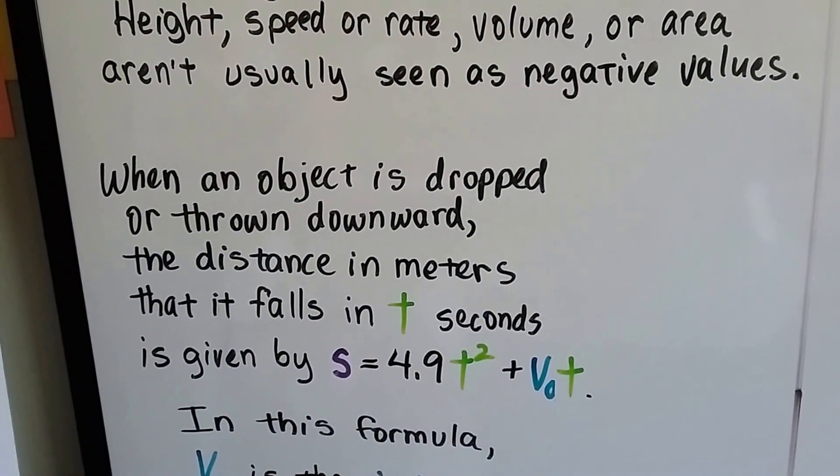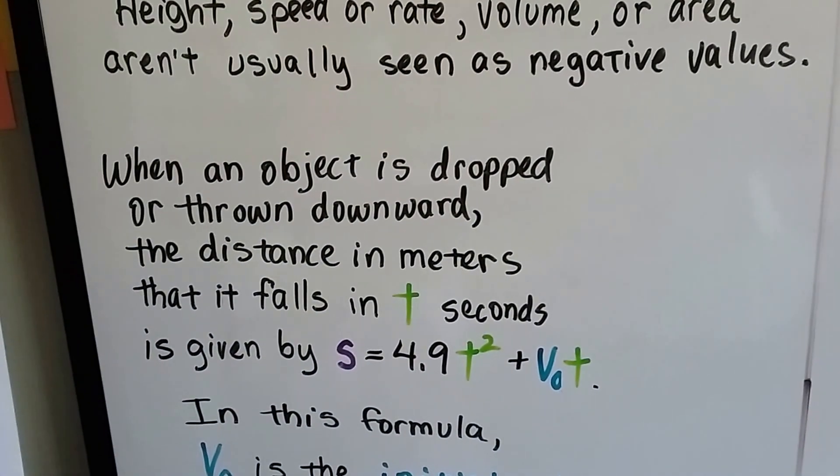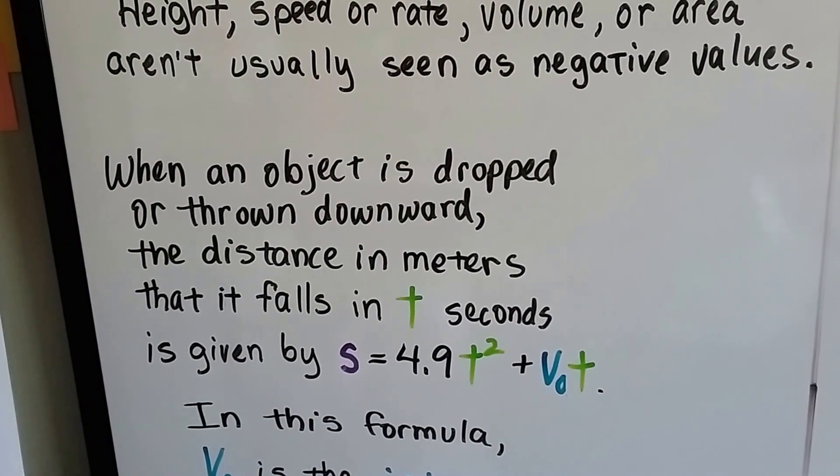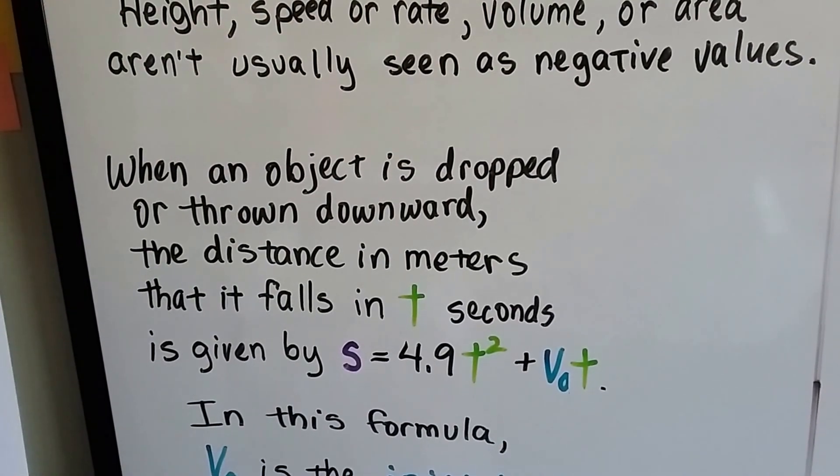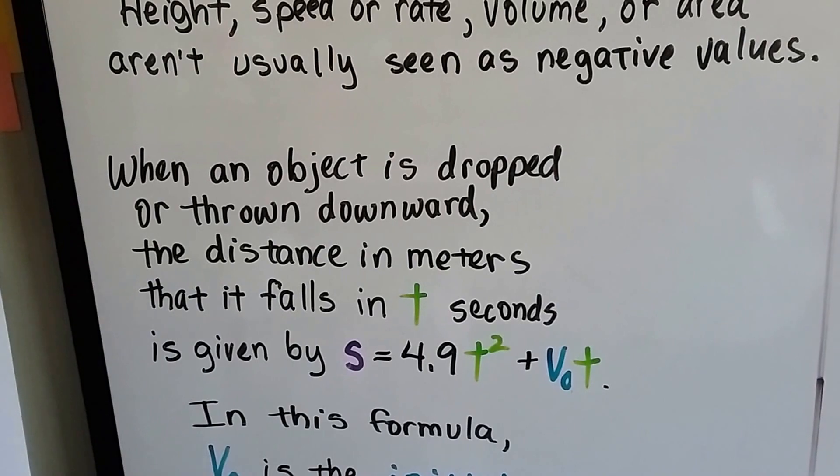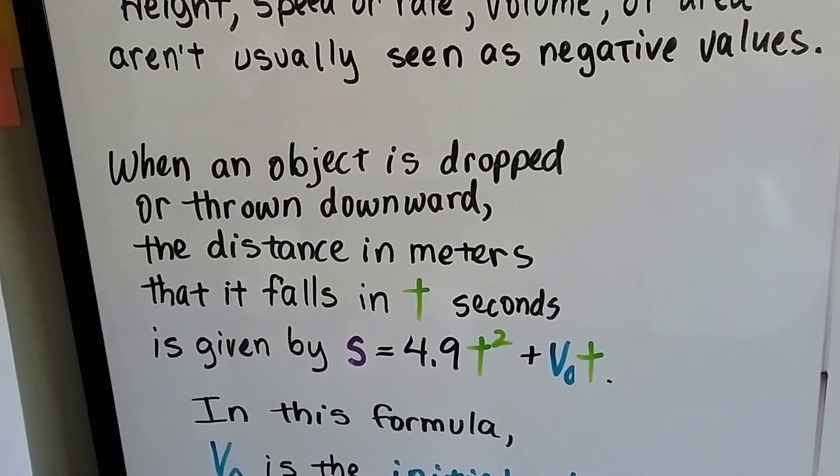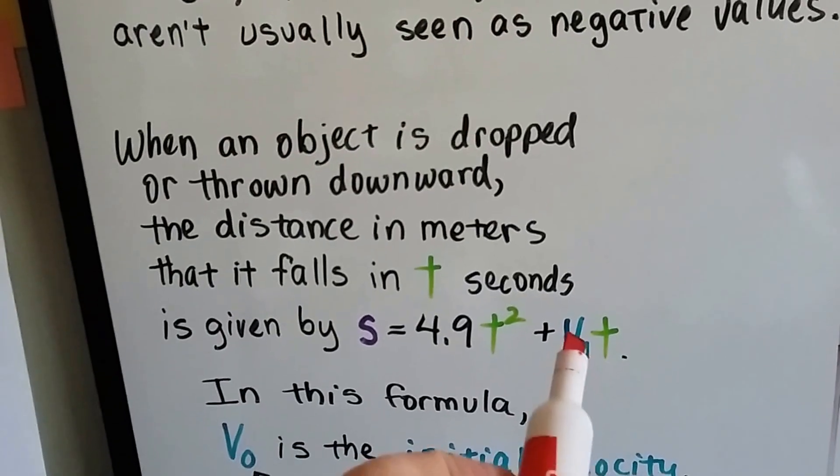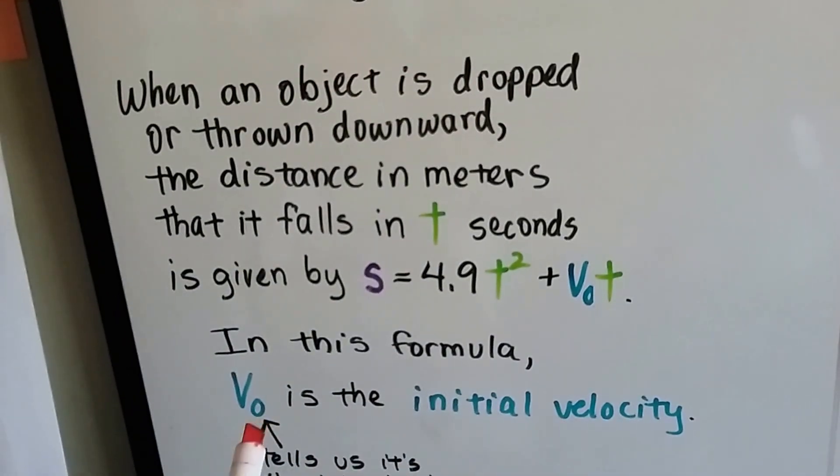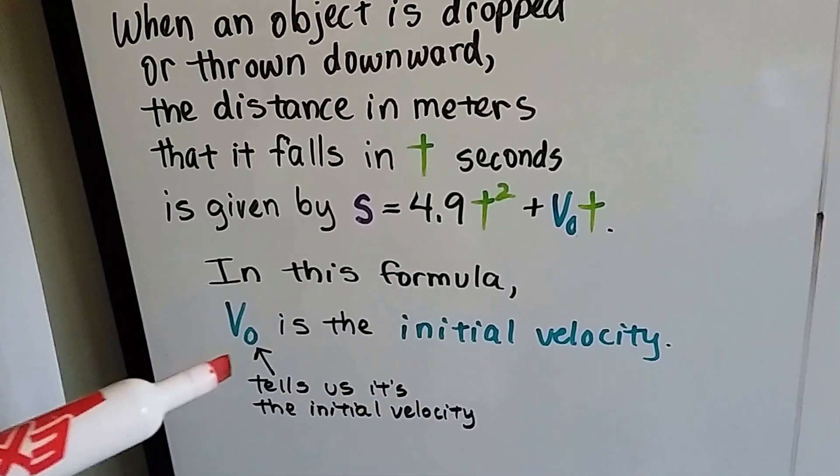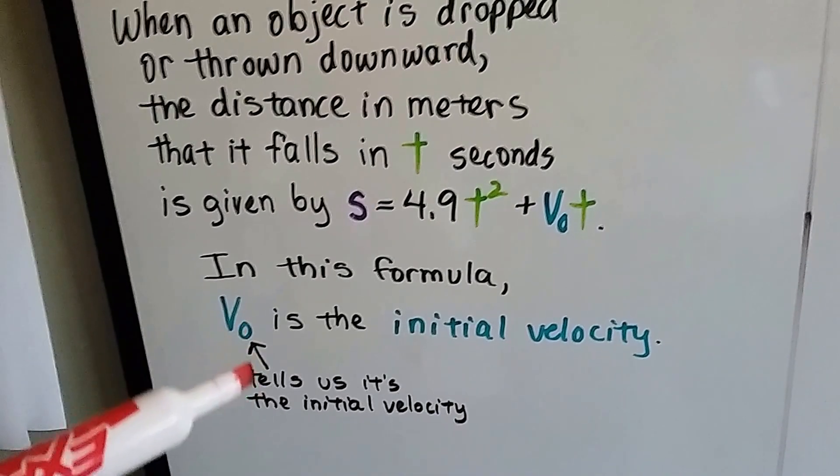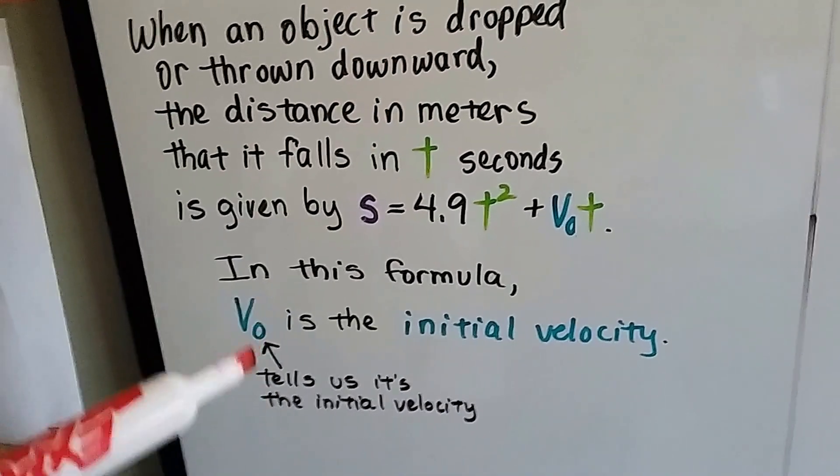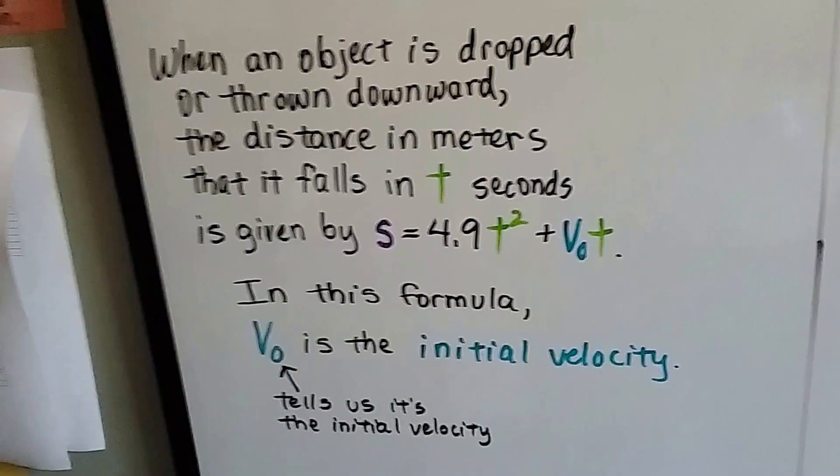When an object is dropped or thrown downward, the distance in meters that it falls in t seconds is given by s equals 4.9 times t squared plus v sub zero t. That little zero right there, this subscript zero, is telling us it's the initial velocity.